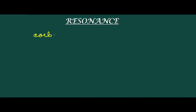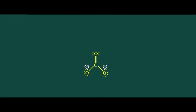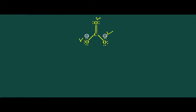Let us take the example of carbonate ion, CO3 2-. The Lewis structure of carbonate ion is like this. You can see that all three oxygen atoms are at different places in space, so it would be distinguishable if I numbered them as 1, 2, and 3.